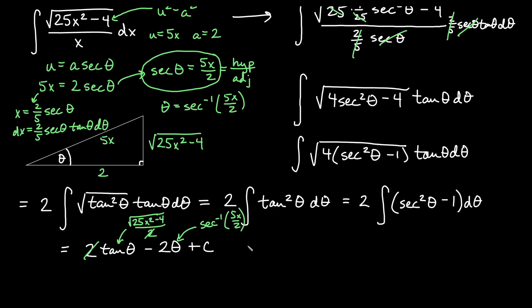And if we replace all of that, then we will get the square root of 25x squared minus 4 as our first term. I have a 2 out here, so it'll be minus 2 inverse secant of 5x over 2 plus c.